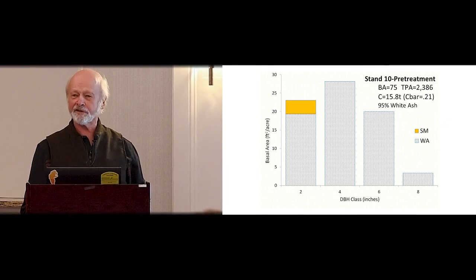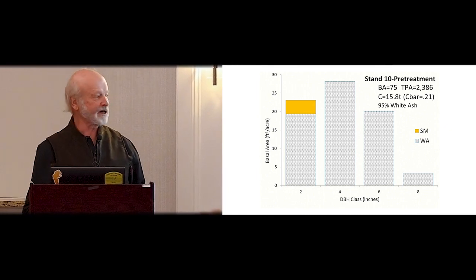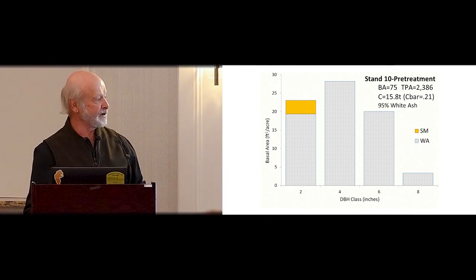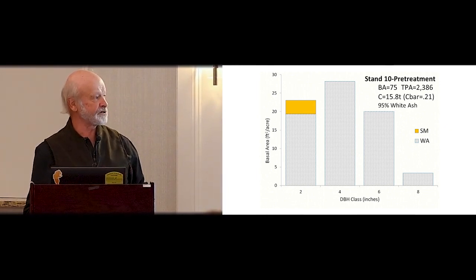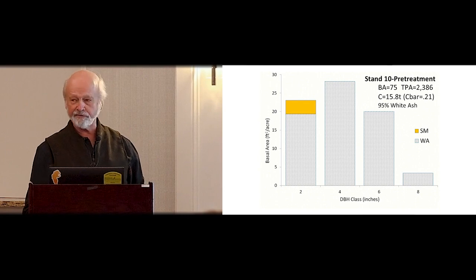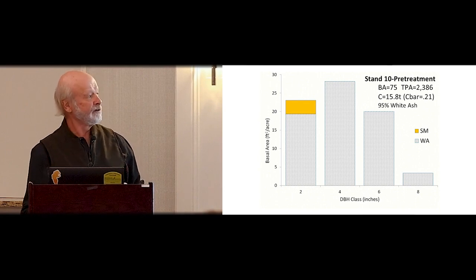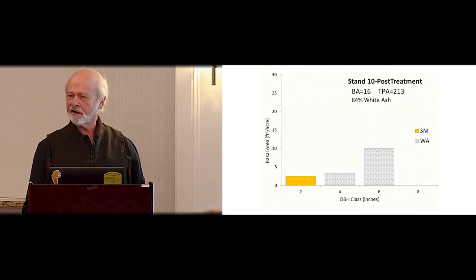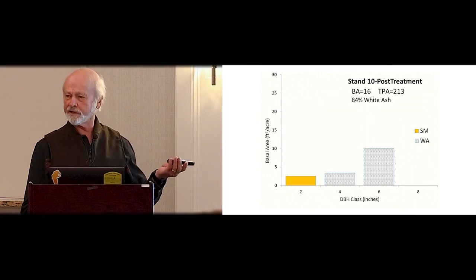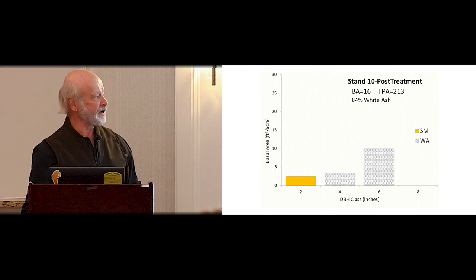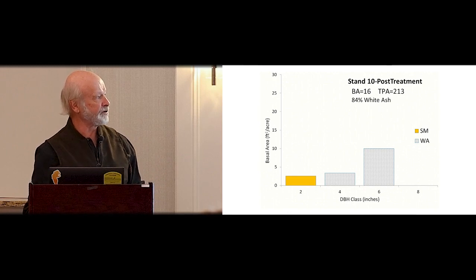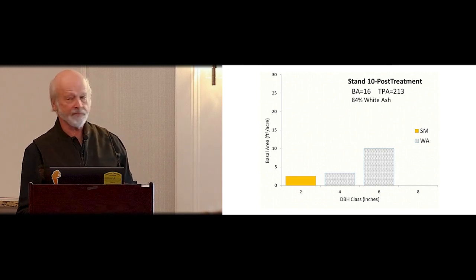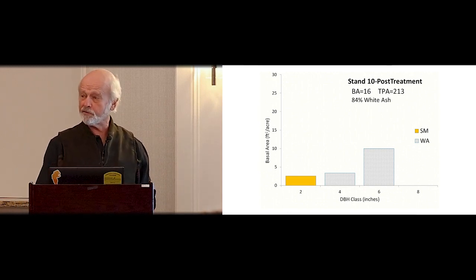Compared to those other stand structures, we have 90% ash here and a couple of little sugar maples. The biggest one is eight inches — this is 45 years old — and only 15 tons of carbon, as you'd expect for small diameter trees. The C-bar is down to 0.2 because the trees are short. After crop tree release, residual basal area of 16. That is actually a legal clear-cut in Maine, although you can't make a clear-cut from a silvicultural treatment.